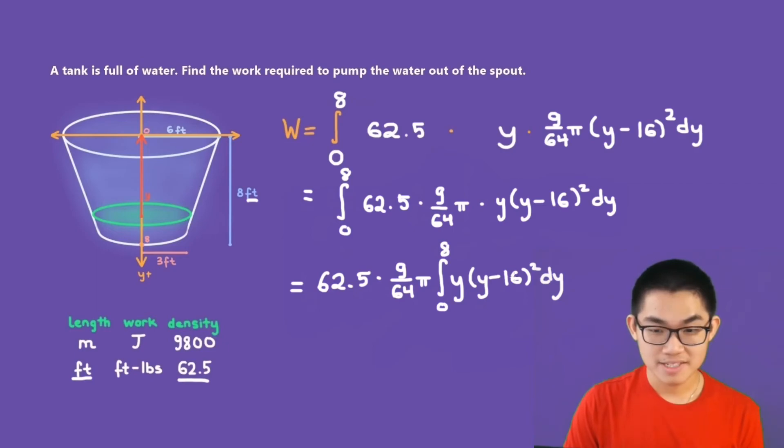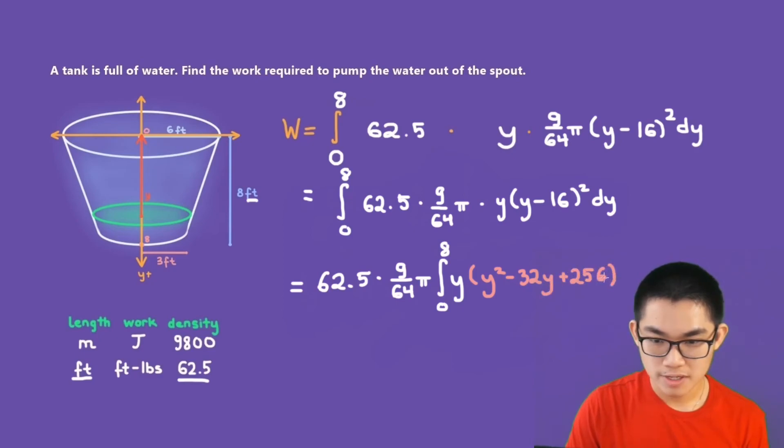Now what is y minus 16 to the power of 2? It is the same as y squared minus 32y plus 256 dy. And now all we have to do is multiply each term with y like this. We will get y to the power of 3 minus 32y to the power of 2 plus 256 times y dy.